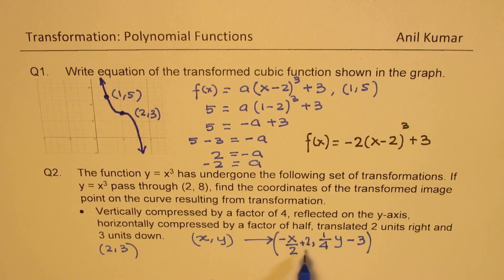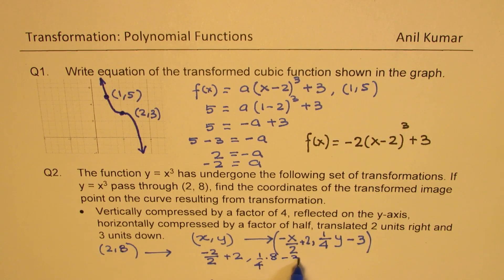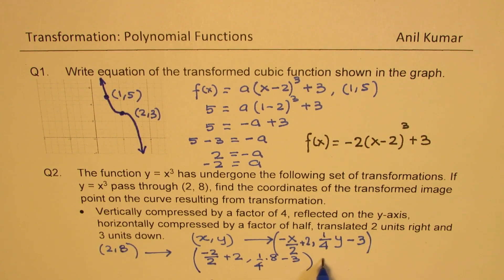Now, if I substitute 2 and 8 here for x, we get our points. So, substituting, what do we get? If I substitute here, we get from 2, 8, if I substitute x as 2, I get minus 2 over 2 plus 2. That becomes the x value. 1 fourth of y value is, sorry, 2, 8, 2, 8 is the point, y value is 8 minus 3. That becomes the coordinate point, which is equal to, that is minus 1 plus 2, which is 1. And here we get 8 divided by 4 is 2, 2 minus 3 is minus 1. So, 1 minus 1 is our answer, correct?